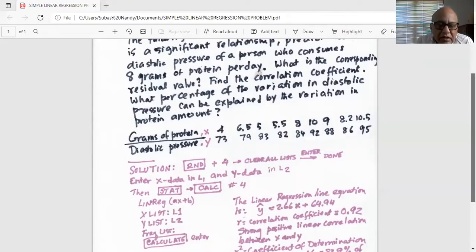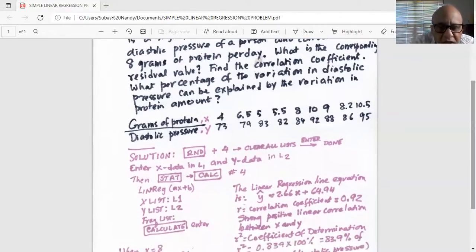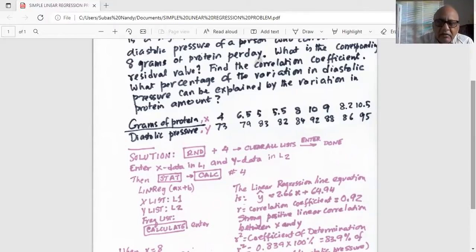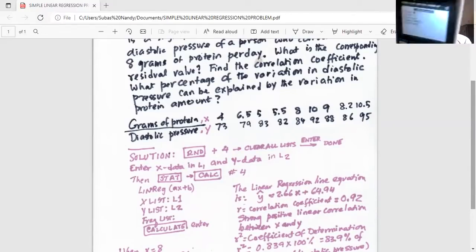Now we will enter X data in L1 and Y data in L2. In order to do that, we do STAT and then one. Then after entering X data in L1 and Y data in L2, we will press STAT button in the second row, then highlight CALC in the top row, then select number four, which is LINREG AX plus B.